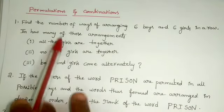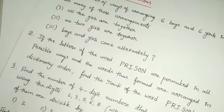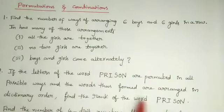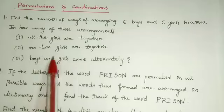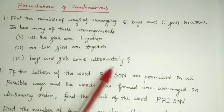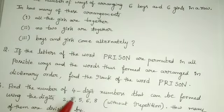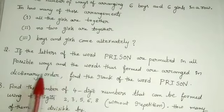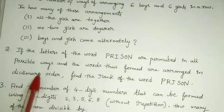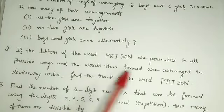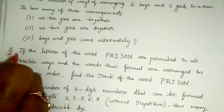See the questions. First one: find the number of ways of arranging six boys and six girls in a row. In how many of these arrangements are all the girls together, no two girls are together, and boys and girls come alternately?